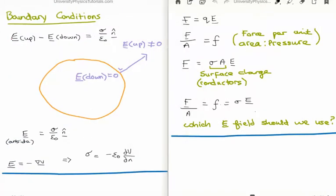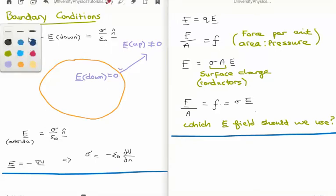In video number 26 we were able to summarize the electrostatic boundary conditions with the following equation, written on the top left hand side of your screen. What we said was that the difference between the electric field above your interface and the electric field below your interface was an amount sigma over epsilon zero, incorporating the normal unit vector to take into account the tangential component. The perpendicular component of the electric field is discontinuous by sigma over epsilon zero, where the tangential component is continuous.